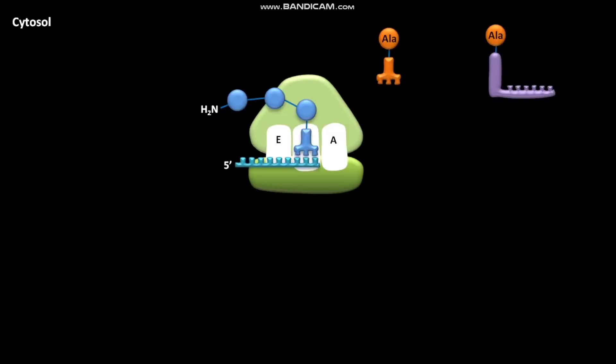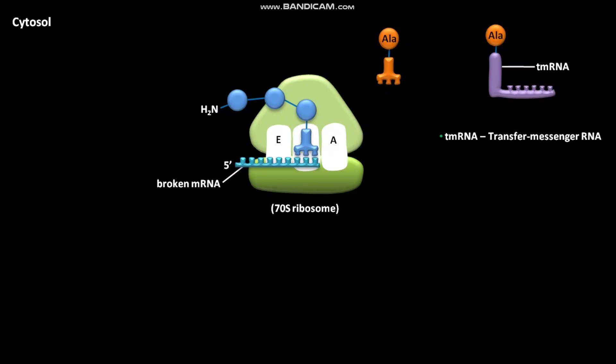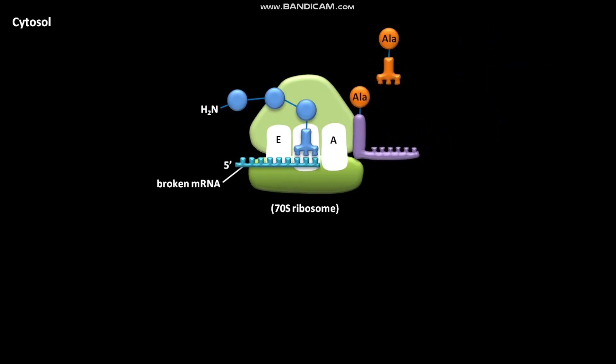In bacterial cytosol, whenever a 70S ribosome translates to the end of a broken mRNA, it stalls on the broken mRNA. A tmRNA carrying alanine then enters the vacant A site of the stalled 70S ribosome. The broken mRNA is then rejected.